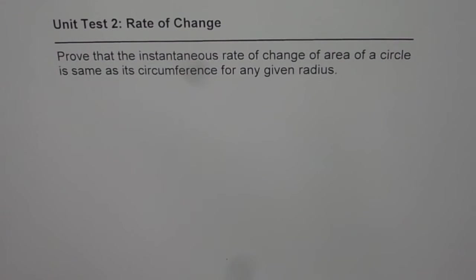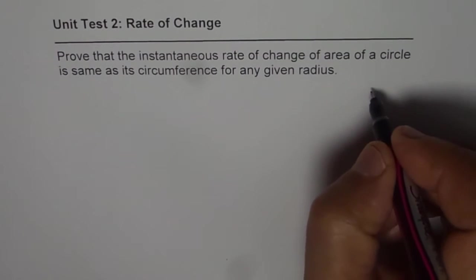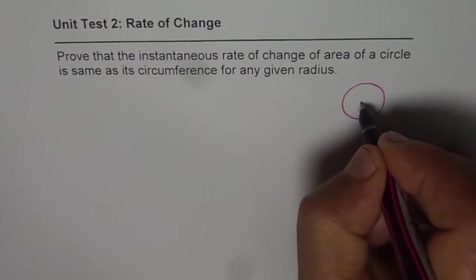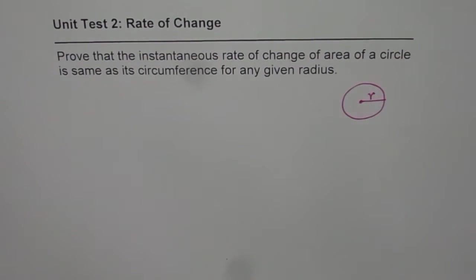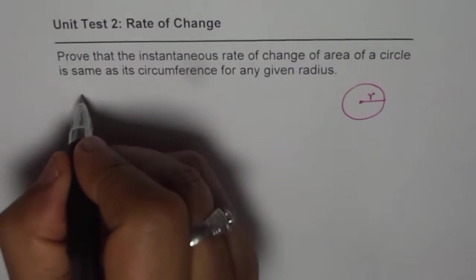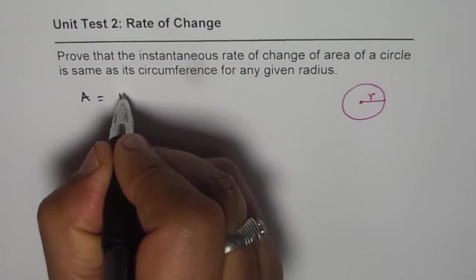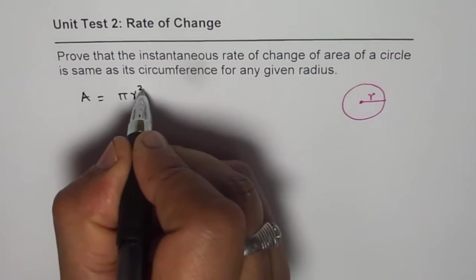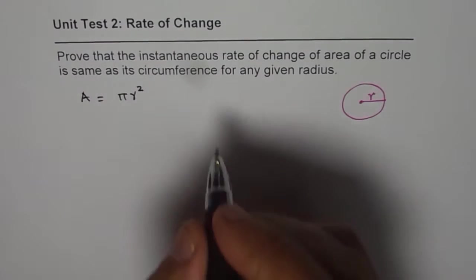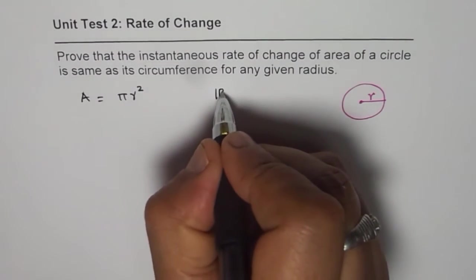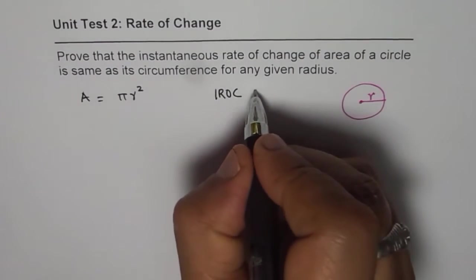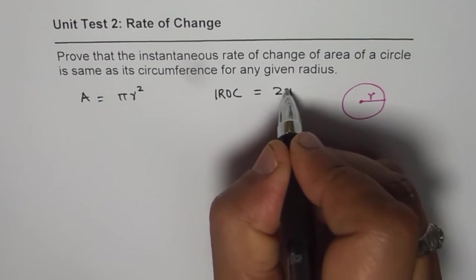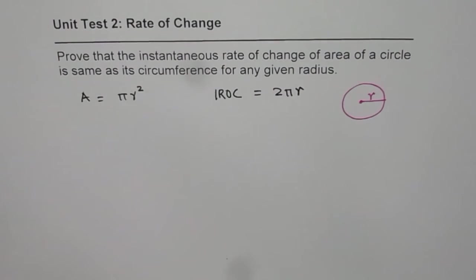So what we are trying to prove here is, let us say we have a circle with radius r. In that case, what is the area of the circle? Area of the circle is pi r square. We want to prove that instantaneous rate of change for this circle is equal to 2 pi r. This is what we want to prove.